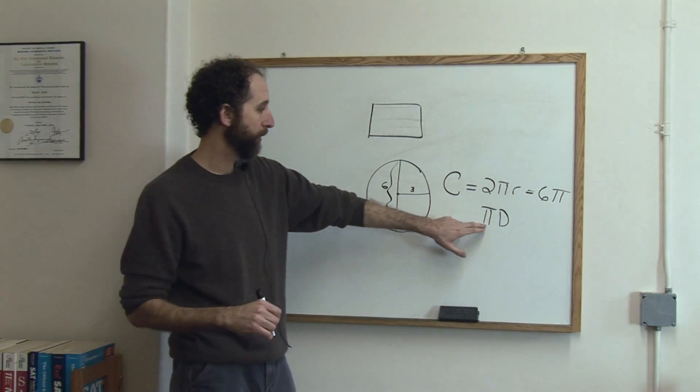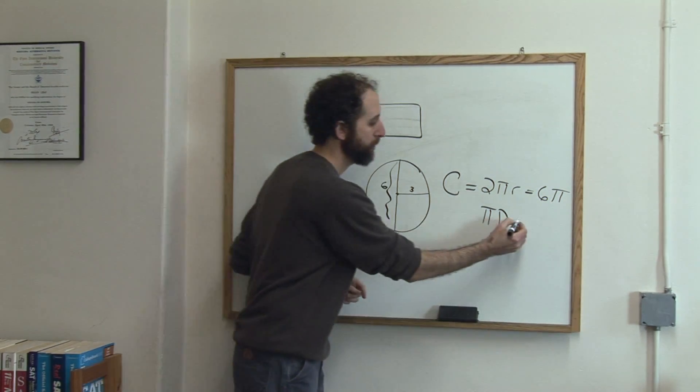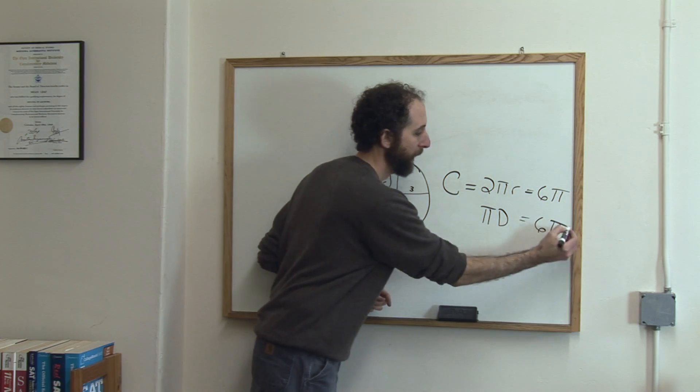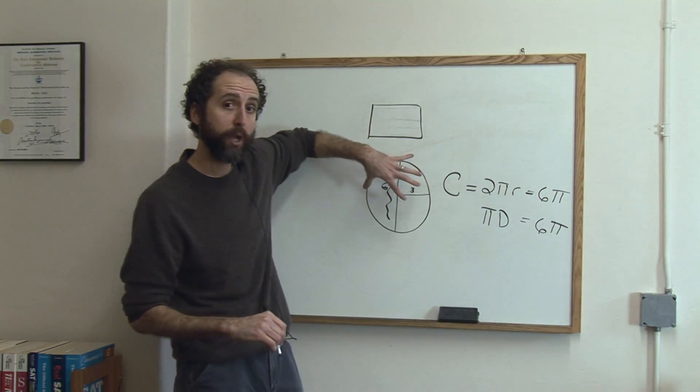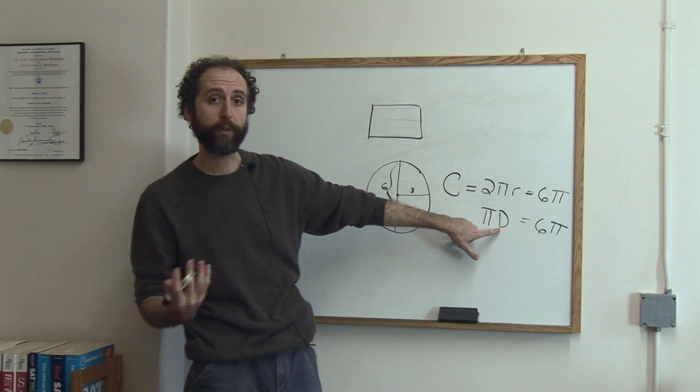Or you could use diameter, which, since diameter is 6, would also be 6π. And the reason there's two formulas is just because 2r, as we were just saying, is d. And that's why they both work.